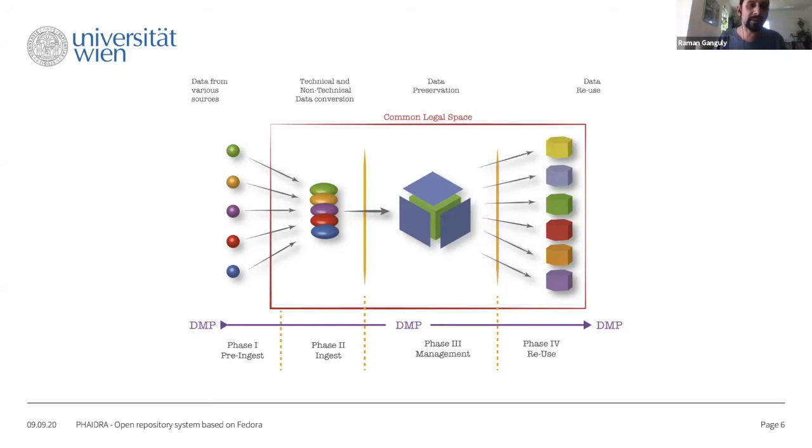In this phase, there is a handover. We do technical and non-technical data conversion. The technical - we look at the formats they are using and check if it's good for long-term archiving. The non-technical is all the description of metadata and clearing legal issues. Then it comes to the repository system, to Phaedra. From there, we have a mechanism where persons and machines can access. This is another handover, then there is the reuse phase, which is phase four.